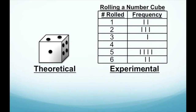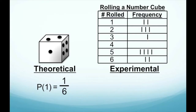Here we have a number cube. A standard number cube has six sides. The theoretical probability of rolling a one is one sixth. For our experimental probability, we count the total rolls from the table: two plus three makes five, plus one more is six, zero fours, four fives makes ten, and six was rolled twice — a total of twelve rolls. We rolled a one two out of twelve times.